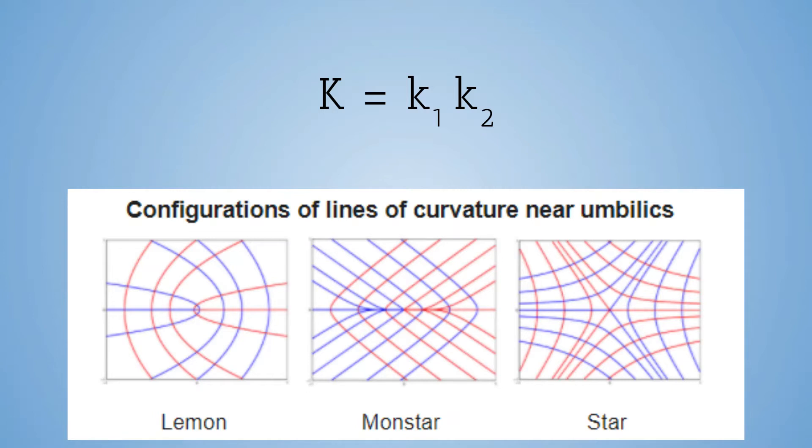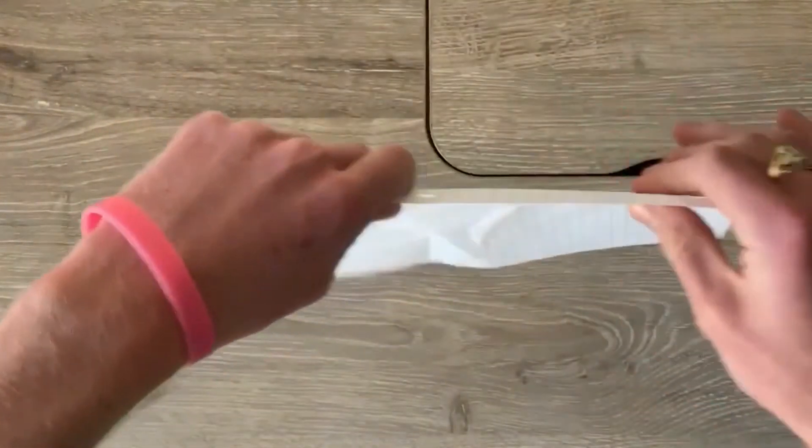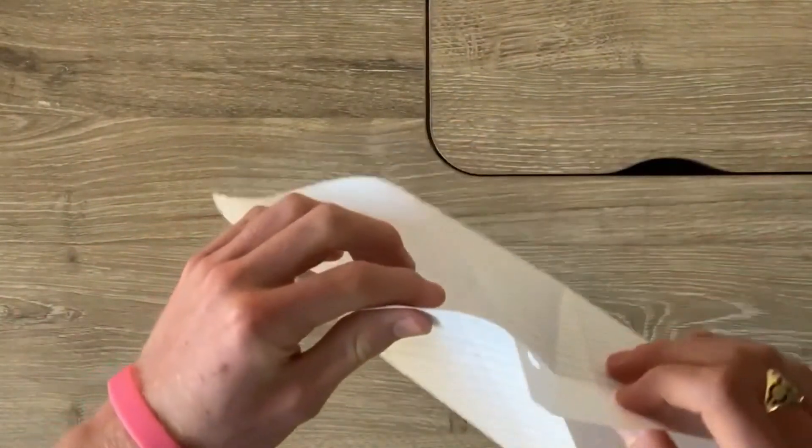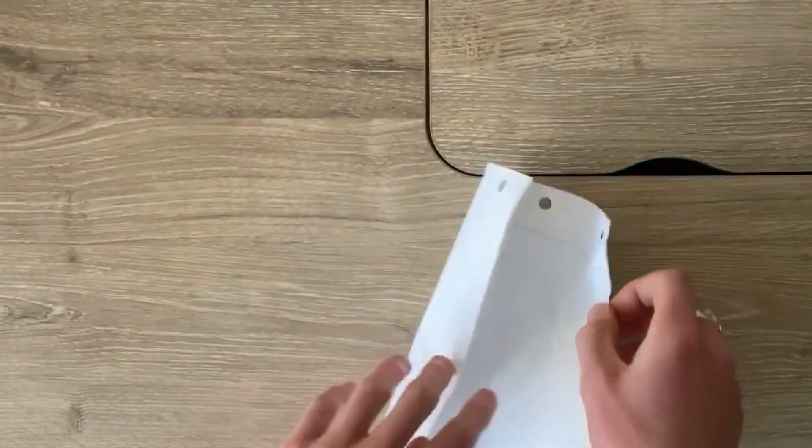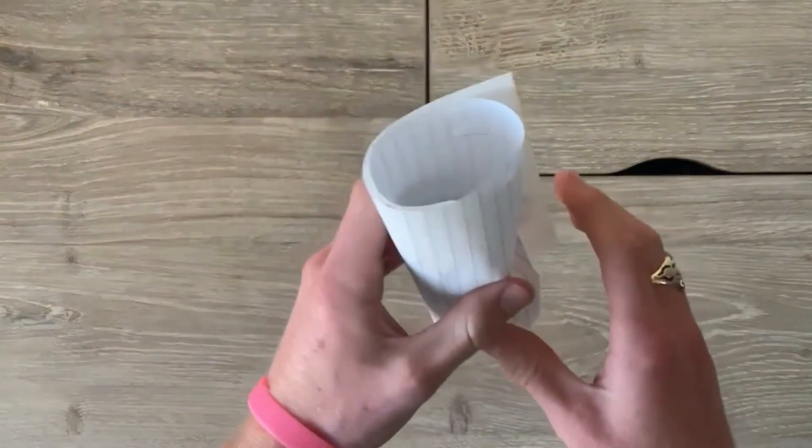One good model to represent Gauss curvature, overly simplified but still good, is to take a sheet of paper. A sheet of paper has no curvature, hopefully that is easy to see, but you can twist it and bend it and change its shape in any way short of breaking it, and its Gaussian curvature remains zero.